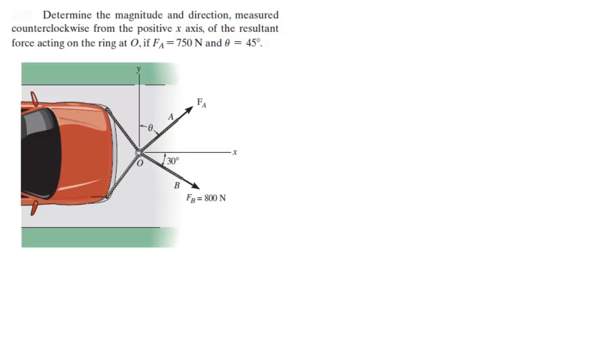Alright guys, now we're going to do this problem that says determine the magnitude and direction measured counterclockwise from the positive x-axis of the resultant force acting on the ring. If this force is 750 N and this is 45 degrees, well this is 45 degrees, this is 45 degrees also, because 45 plus 45 equals 90, which is this angle of the form right here.